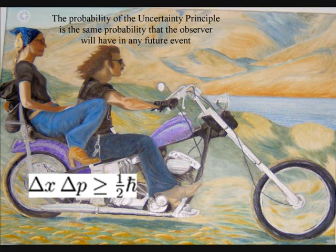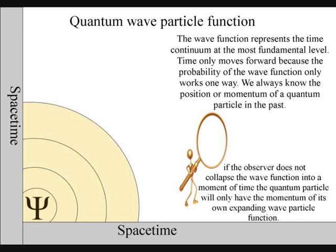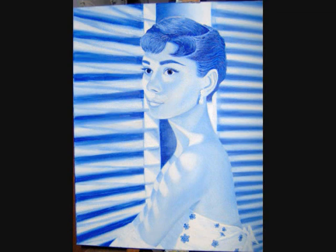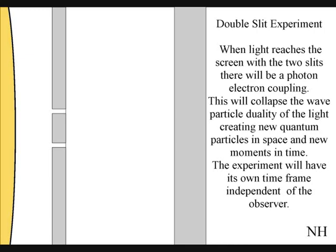If the observer does not collapse the quantum-wave-particle function, the quantum-particle will only have the momentum of its own wave-function. Because light is electromagnetic radiation in the visible spectrum, this process is visible to us.